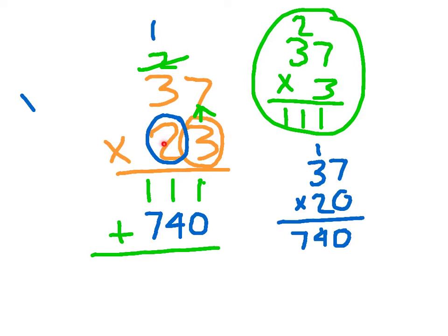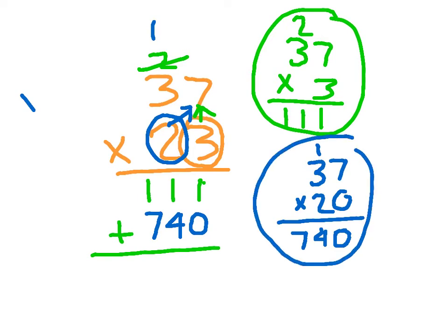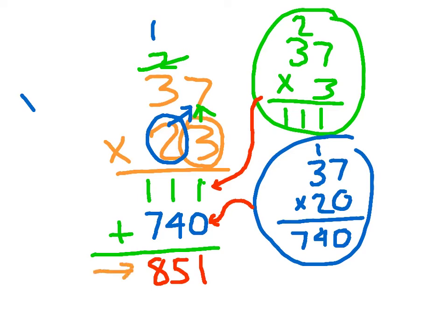Because this was worth 20, I call that the magic 0. You go through the multiplication process: 2 times 7 is 14, place the 4, regroup the 1; 2 times 3 is 6 plus 1 is 7. Then I put together 111 and 740 by adding them. This is the product of 37 times 3 — the ones digit — and this is the product of 37 times 20 — the tens place. Our answer: 37 times 23 equals 851. And that's double-digit multiplication.